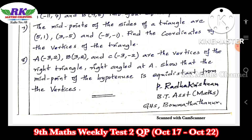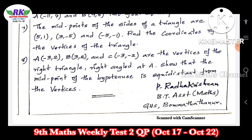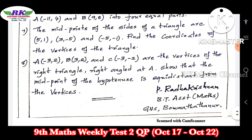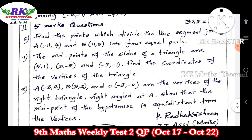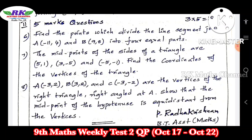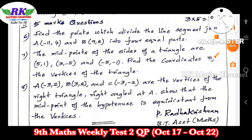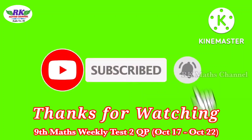If you want to use the distance formula, you can use it. The distance formula is: the square root of (x2 minus x1) whole square plus (y2 minus y1) whole square. This is the model question paper. If you want to use the question paper, please like, share and subscribe. Thank you.